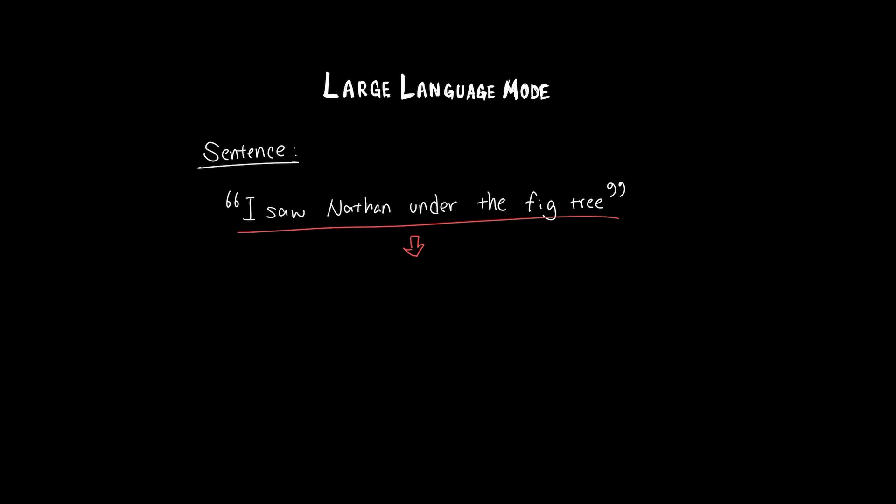For example, take the sentence: I saw Nathan under the fig tree. You can actually squeeze out many facts from this one sentence. Nathan was under the fig tree. The tree I saw was a fig tree. I saw Nathan. I saw the fig tree. I saw both Nathan and the fig tree.